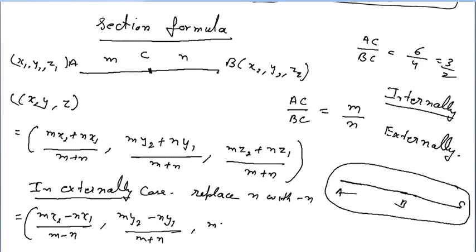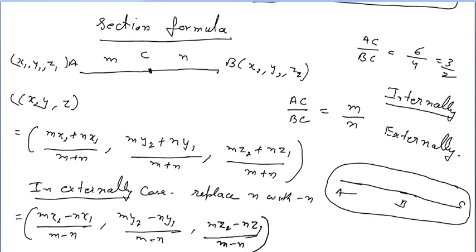In practice, the question will not give a negative sign by default. They will say the point divides the line externally in ratio 3:4. Your N is 4 and M is 3, and you take the negative sign with N and apply the external division formula.